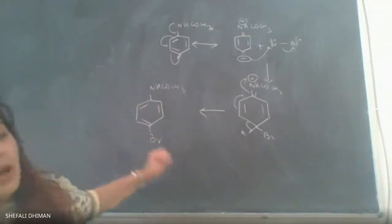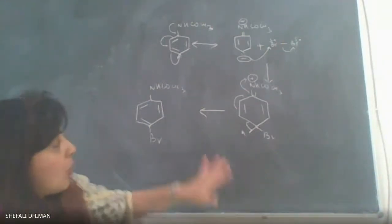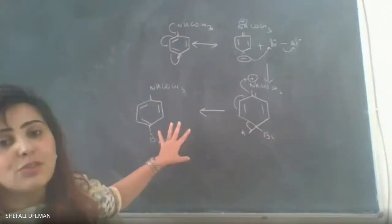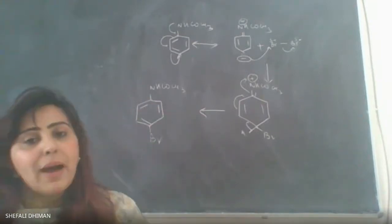You end up with para brominated acetanilide. You can form ortho as well, but the ortho formation would be less due to steric hindrance. More would be the para product.